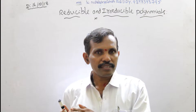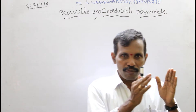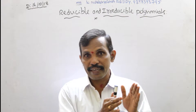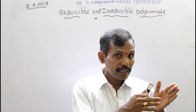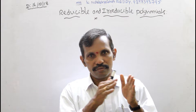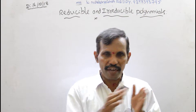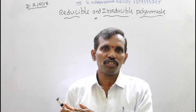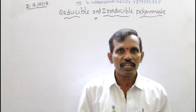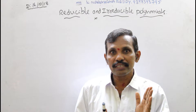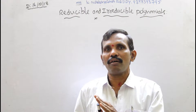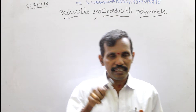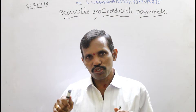This main polynomial x squared minus 2x minus 3 contains degree 2. But after factorization, we get two polynomials — x minus 1 and x minus 2. These individual polynomials are called irreducible. x minus 1 is irreducible. x minus 2 is irreducible.